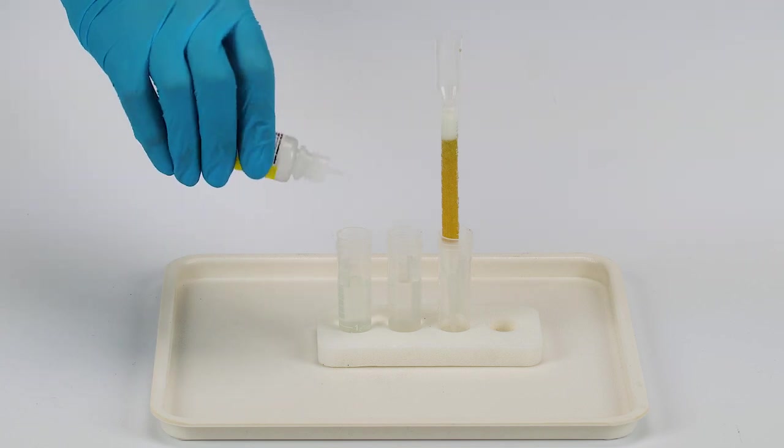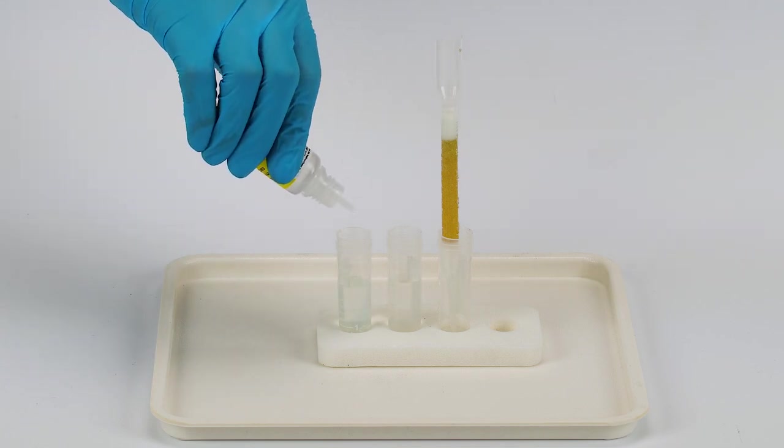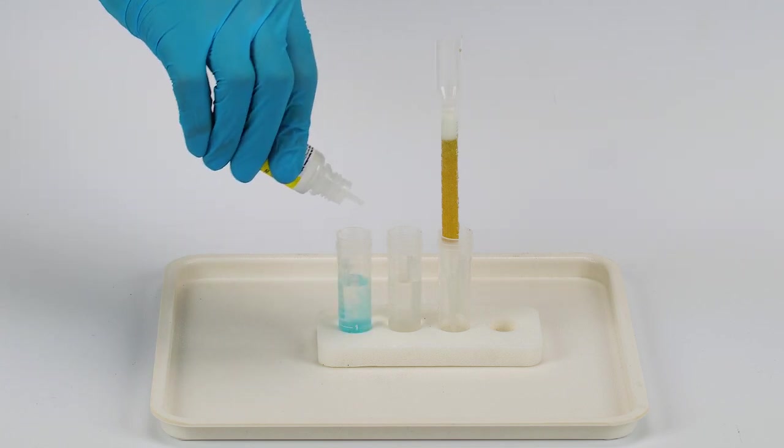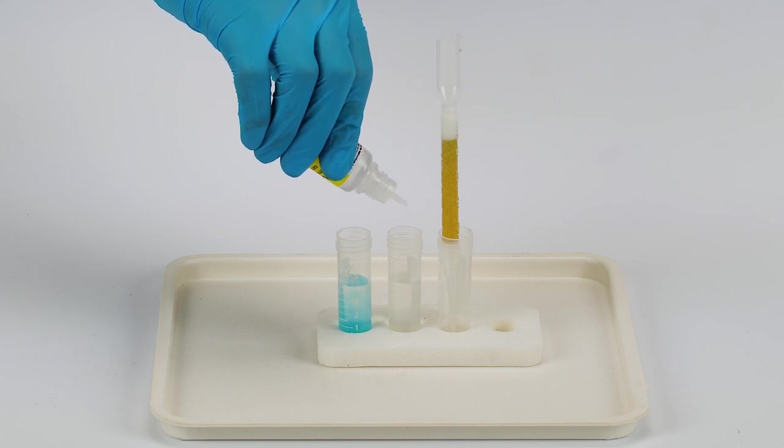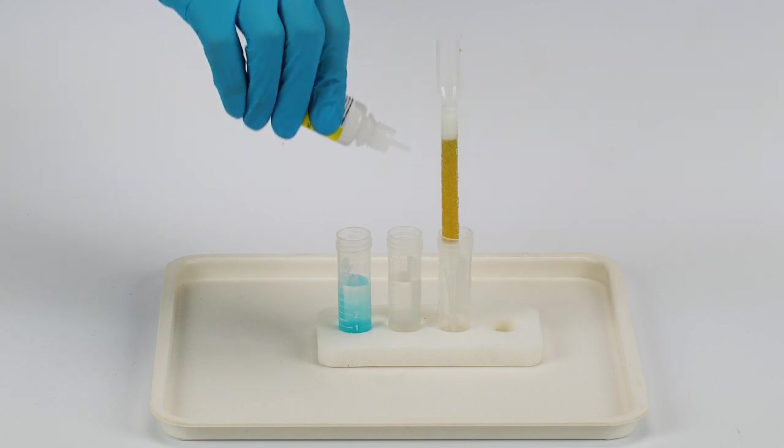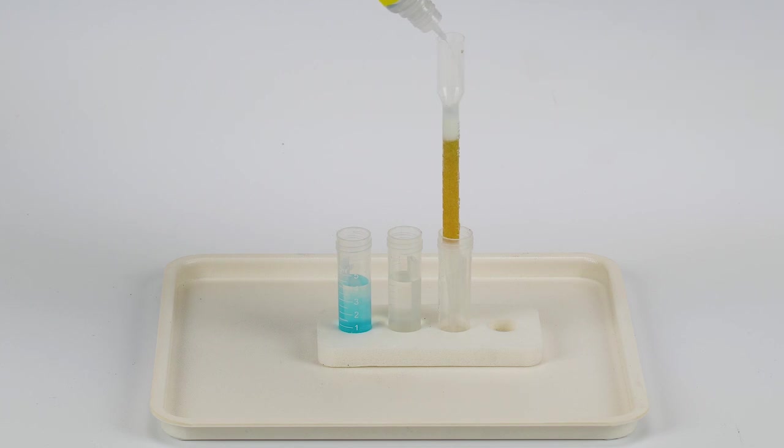Now add five drops of ammonia carbonate to both of the first two vials. Check the difference between the solution colors now. You can also check what happens to the filter itself when you add ammonia carbonate.